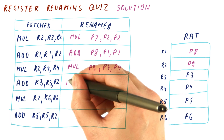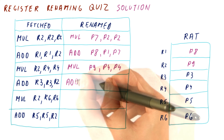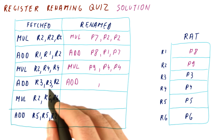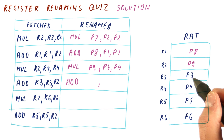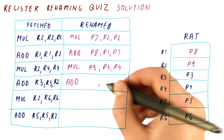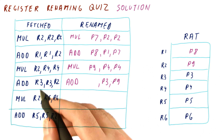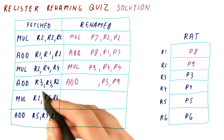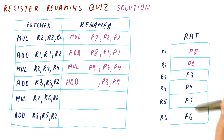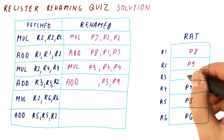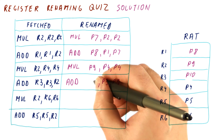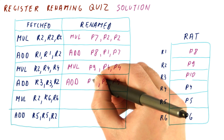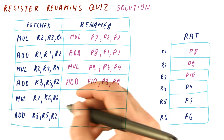Then we have the ADD of R3 and R2, which are P3 and P9. We write the result to R3, which becomes P10 before that happens.